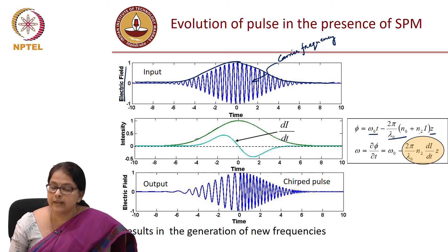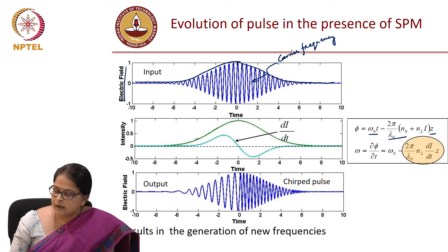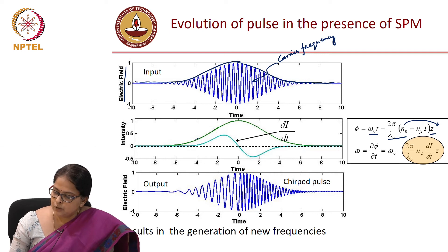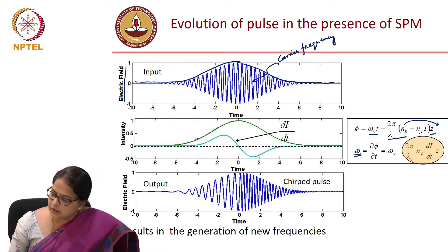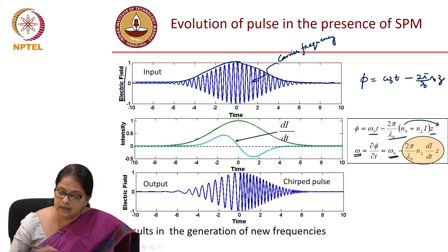The instantaneous frequency is ω = ω₀ - (2π/λ)·N₂·(dI/dt)·z. Without the nonlinear effect, the instantaneous frequency would simply be ω₀ — constant at every point in time, as shown in the top graph. But now the instantaneous frequency changes, and that change is decided by dI/dt.